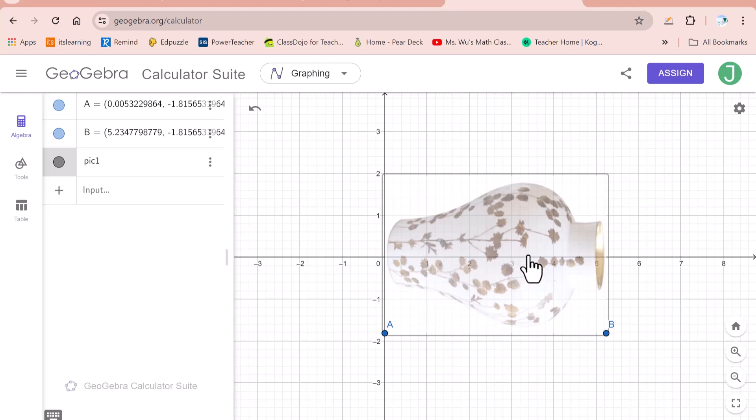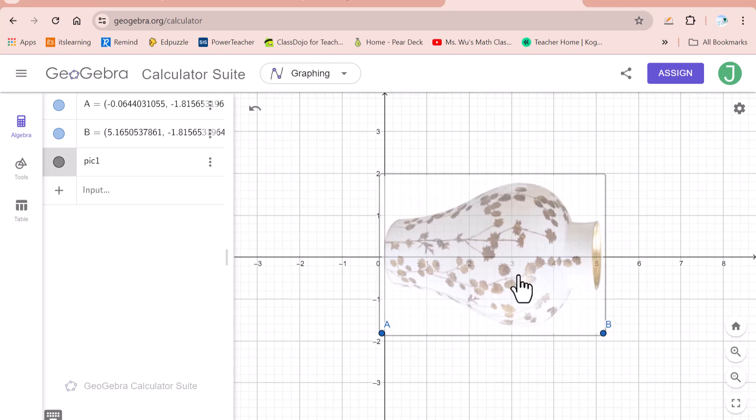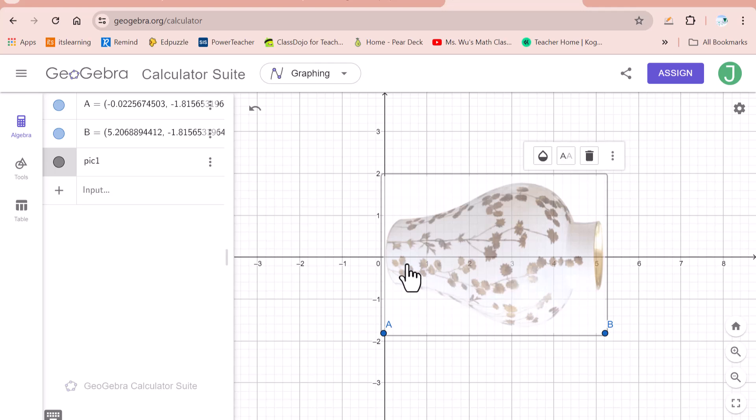You could see this x-axis now. Then try to make the central line of this vase on the x-axis.